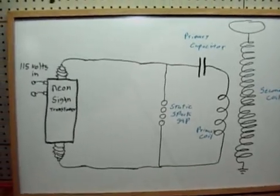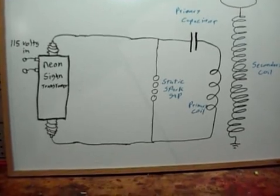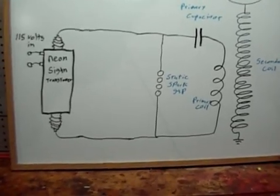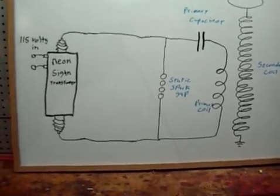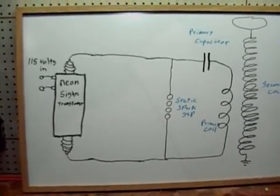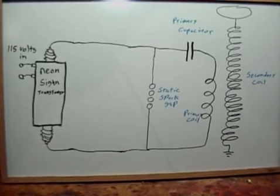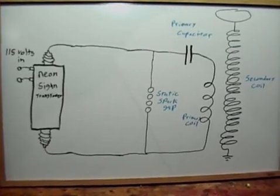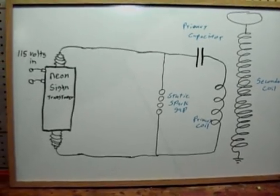One would think that once the spark gap fired you'd have a short circuit across the neon sign transformer, but the spark gap fires and quenches very rapidly and the neon sign transformer has a lot of inductance to it. Plus it's current limited so it doesn't short it out in any sense.